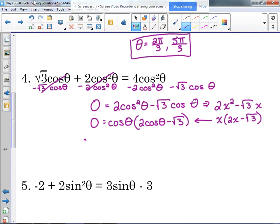So now it's factored. We can set our factors equal to zero. Cosine of theta is equal to zero. We just did that a second ago. That is at pi over two and three pi over two.